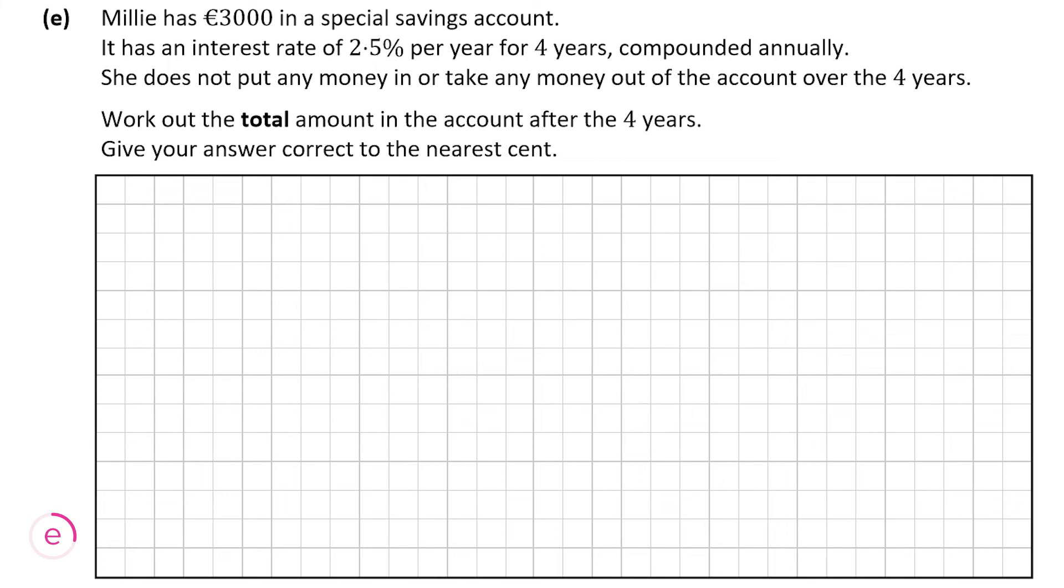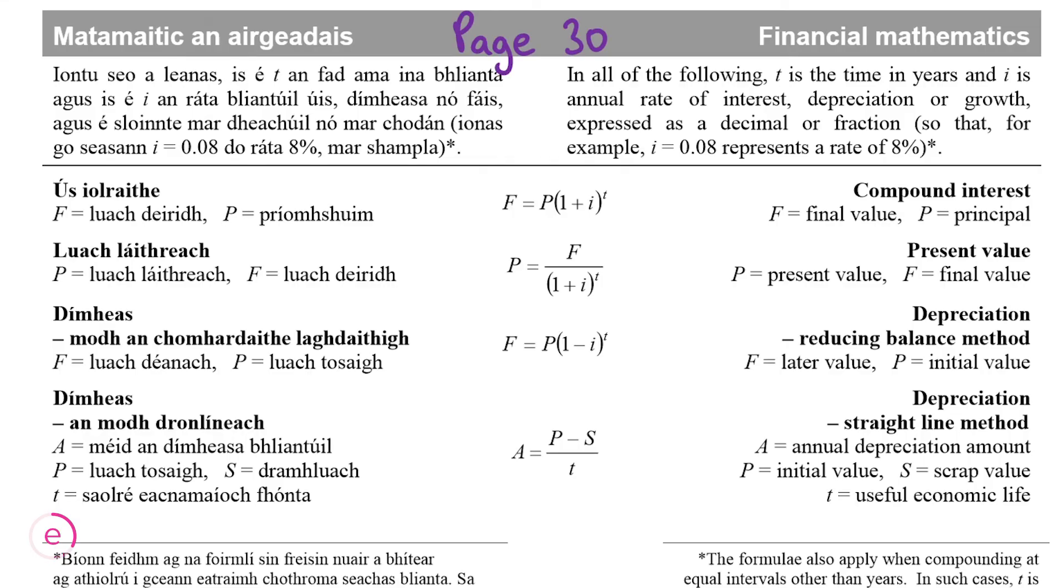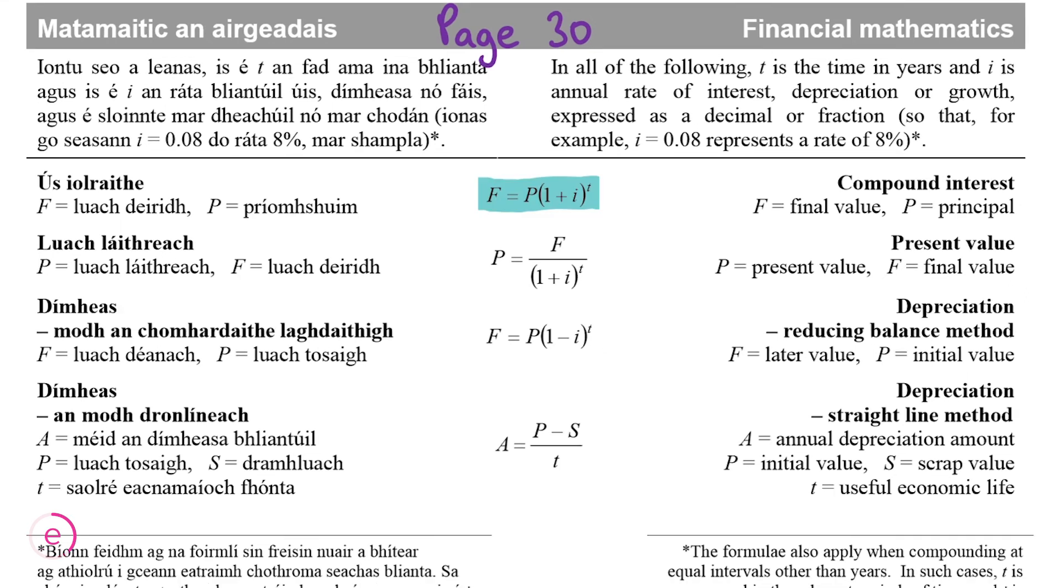It's the first formula there. F is equal to P times by 1 plus I to the power of T. F is the final value, which is what we want to work out. P is the principal, the amount of money you put in at the start. In our case, that's going to be €3,000. Be careful, I is the interest rate, but it has to be as a decimal, or else it'll be hard to put into the calculator. Make sure if, for example, the interest rate is 8%, that's not 8%, it's 0.08. You don't put in 1 plus 8%, you put in 1 plus 0.08. And time is just the time normally in years. The question is in years, so therefore T is just going to be 4. Now let's go back to the question and we're going to use this formula to work out the value of her investments after the four years.